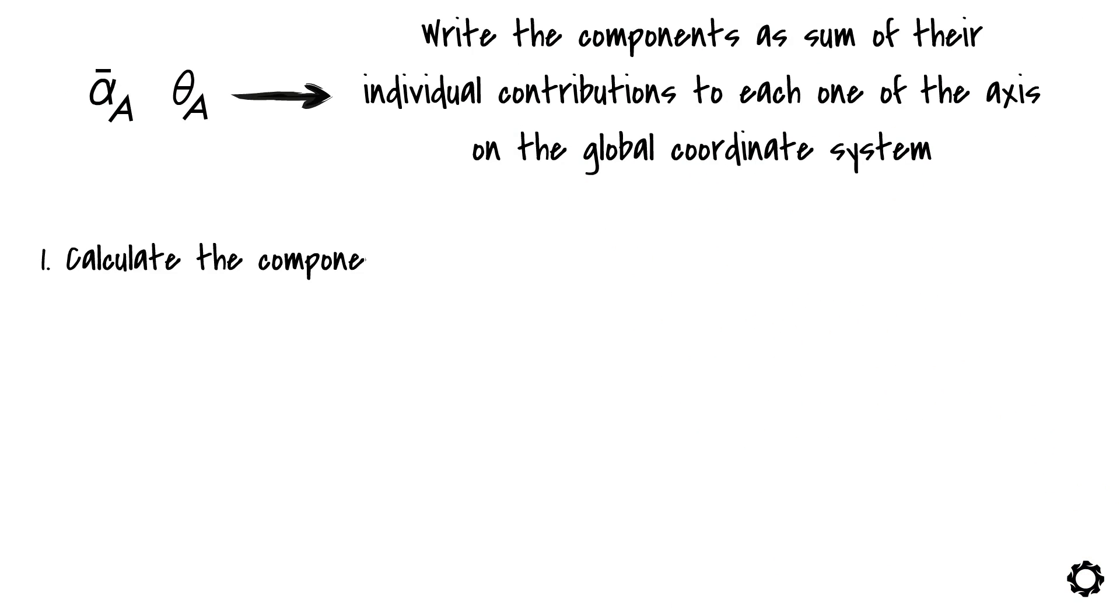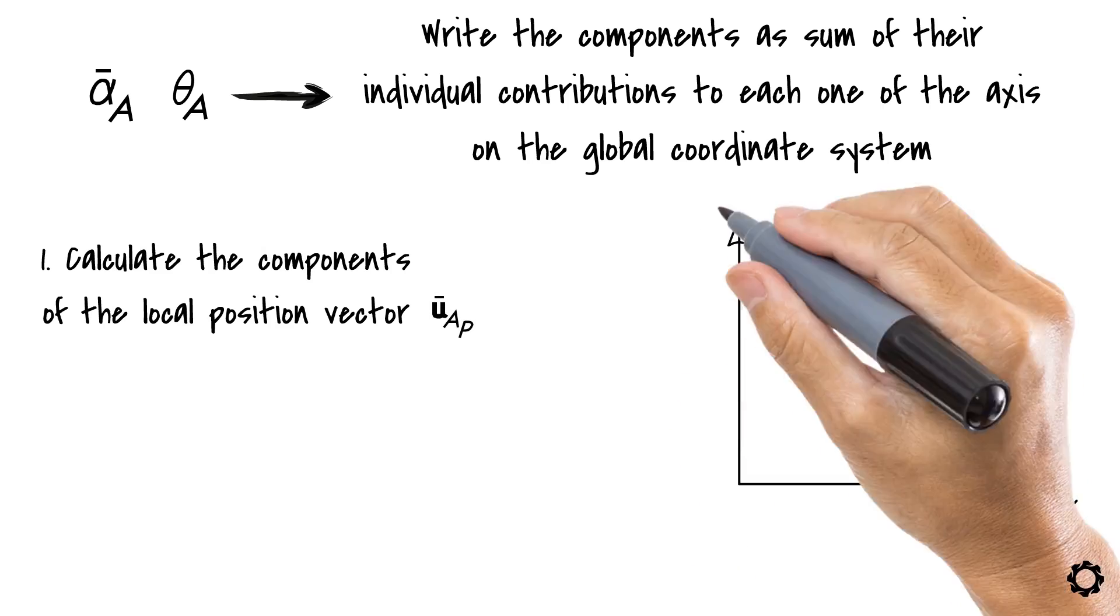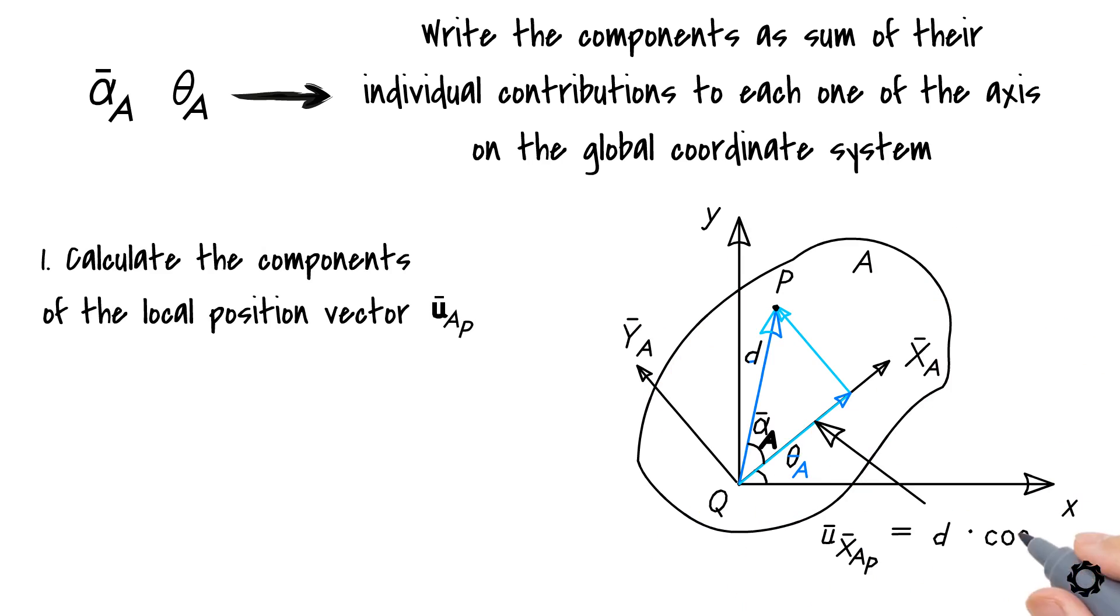First, we calculate the components of the local position vector u̅_ap in terms of the distance d and the angle ᾱ_a.